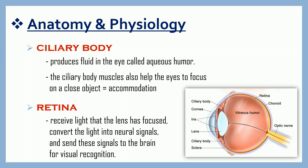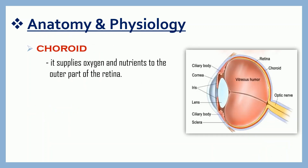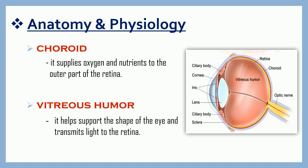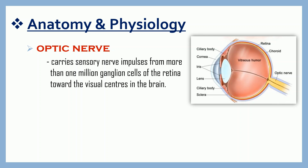Retina. The purpose of the retina is to receive light that the lens has focused, convert the light into neural signals, and send these signals to the brain for visual recognition. The retina processes a picture from the focused light and the brain decides what the picture is. Choroid. It is a thin layer of tissue made up of almost blood vessels that supply oxygen and nutrients to the outer part of the retina. We also have vitreous humor, which helps support the shape of the eye and transmits light to the retina. Finally, the optic nerve. It is the second cranial nerve that carries sensory nerve impulses from more than one million ganglion cells of the retina toward the visual centers in the brain.